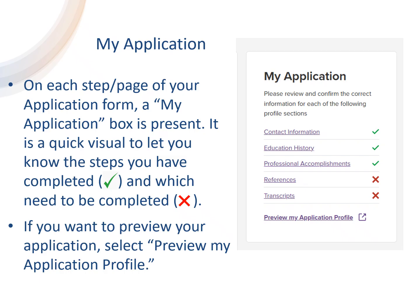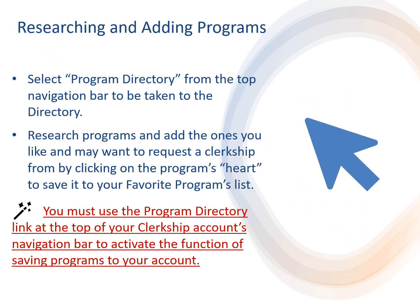On each step or page of your application form, a My Application box is present. It is a quick visual to let you know the steps you've completed, designated by a green check, and which need to be completed, which have a red X. If you want to preview your application, select Preview My Application Profile in the My Application box. You must use the Program Directory link from the top menu in your account to choose programs for clerkship requests. If you do not access the directory through your account, the hearts do not appear so you cannot save programs to your favorites list.